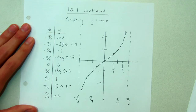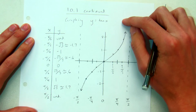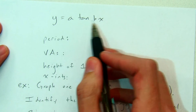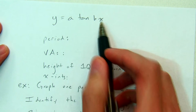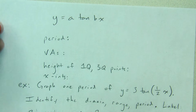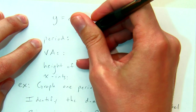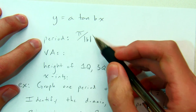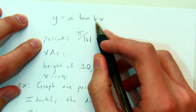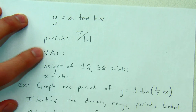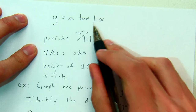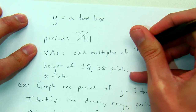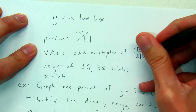This is our parent function y equals tangent x. Just like in class with sine and cosine, now we're going to work on changing y equals tangent x and graph y equals a times tangent of bx, where a and b can be any numbers. The period of y equals a·tangent(bx) is pi divided by the absolute value of b. In the problem we just did, b was 1, so the period was pi over 1, which is pi. But if b is some other number, we do pi divided by b. The vertical asymptotes occur at odd multiples of pi over 2 times the absolute value of b.